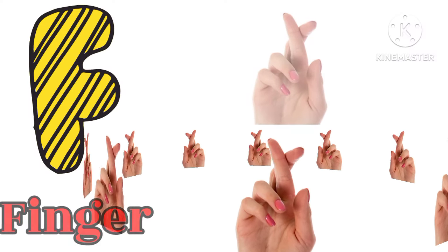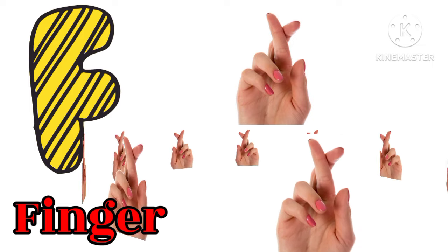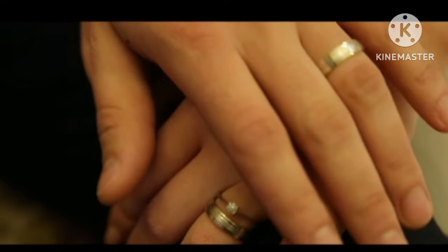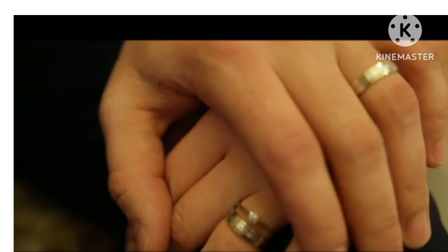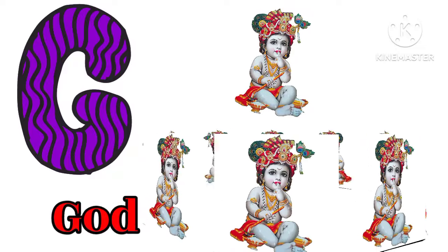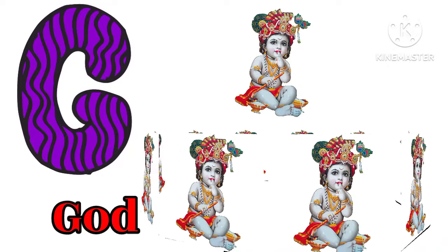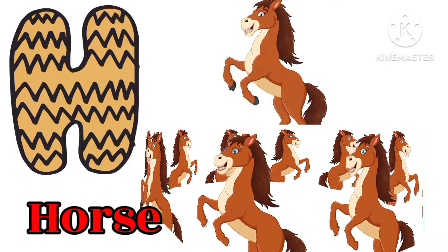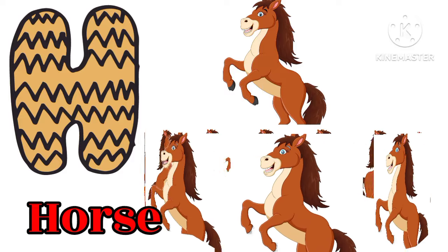F for Finger — Finger means Unggili. G for God — God means Bhagwan. H for Horse — Horse means Ghoda.